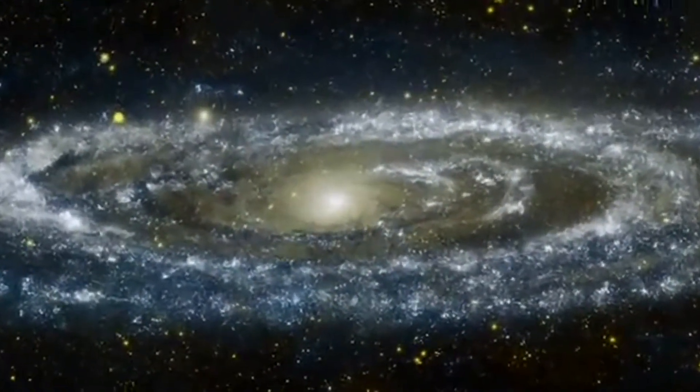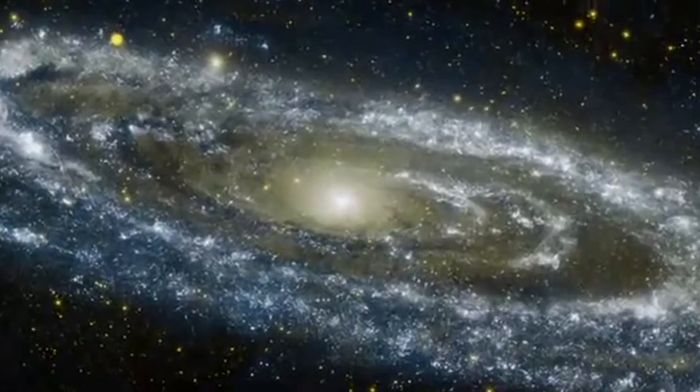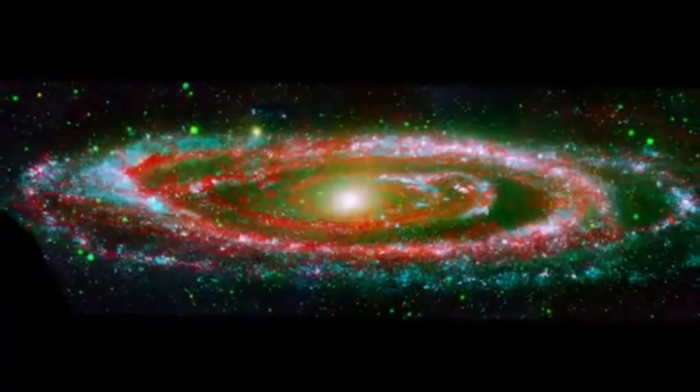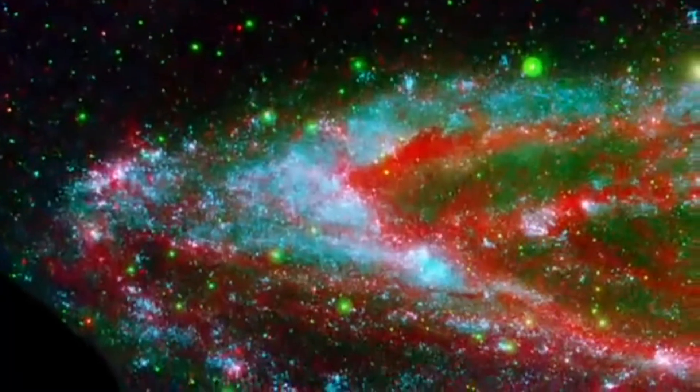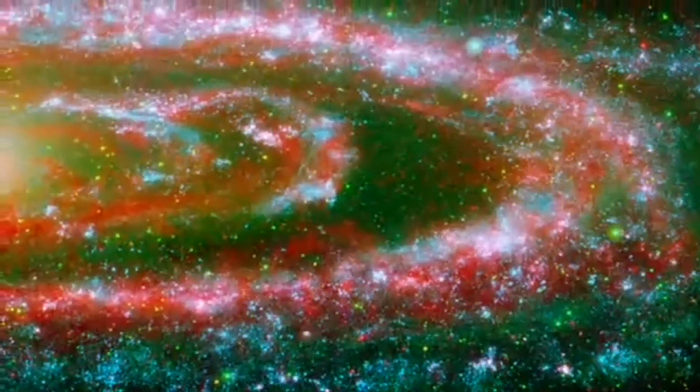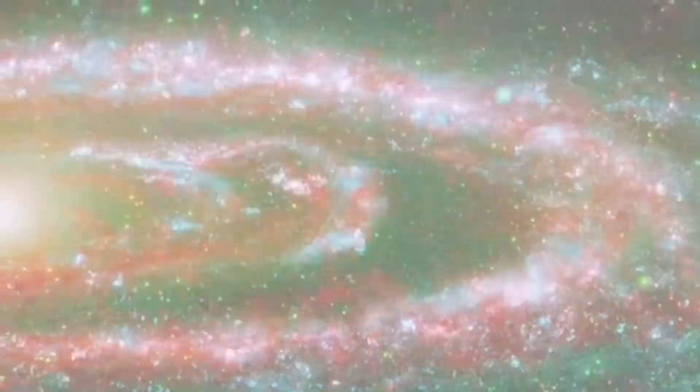Combining the infrared view of Spitzer with the ultraviolet light captured by NASA's Galaxy Evolution Explorer offers yet another perspective. The disrupted ring and irregular splashes of the hottest young stars highlight the ongoing disruption in Andromeda.